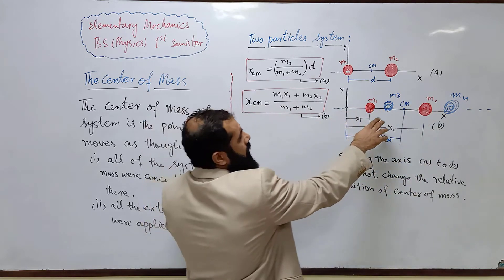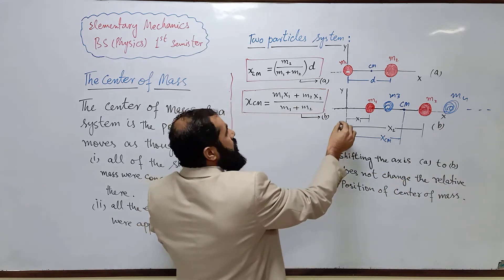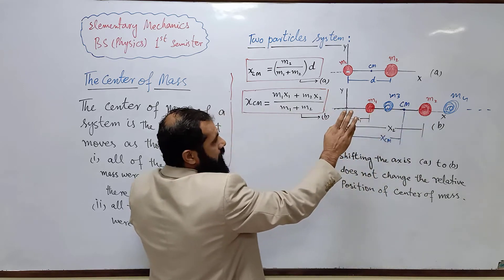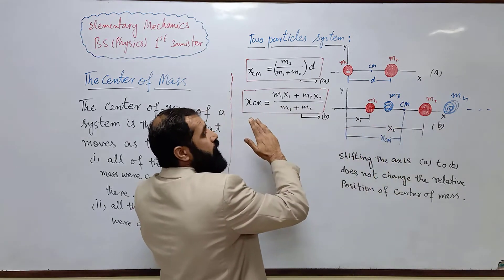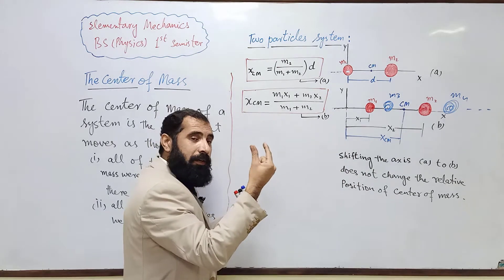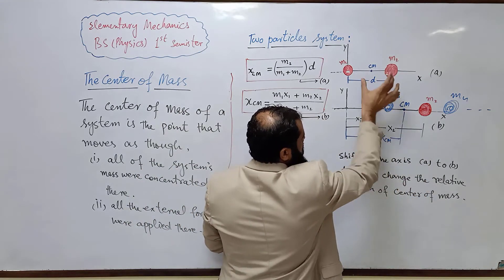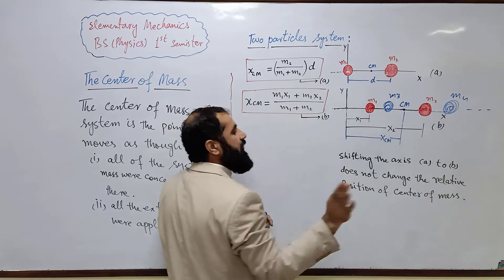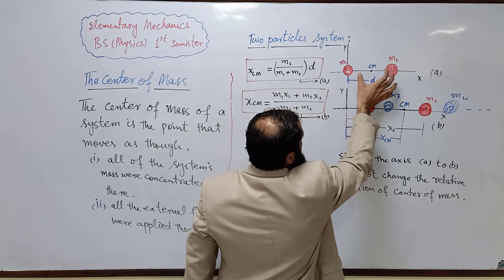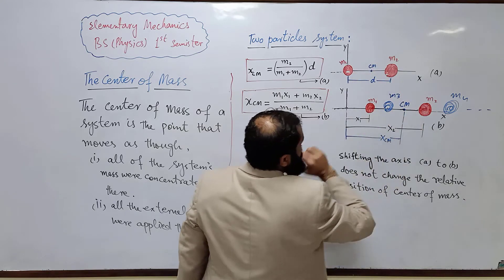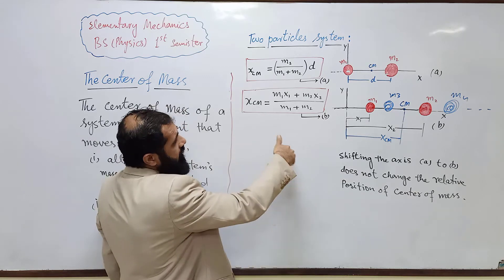For the same system of two particles shifted along the x-axis — you can ignore the blue squares for now — you can see that the center of mass has shifted by some amount, but both masses have been shifted by the same displacement. Shifting the axis from position a to position b does not change the relative position of the center of mass. The center of mass is at the same relative position in both cases.